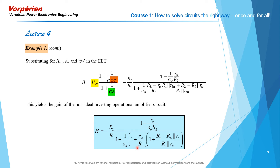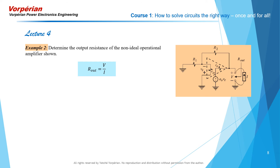Next, we're going to work out the output resistance of this amplifier. In the second example, we determine the output resistance of the non-ideal operational amplifier. To do so, we connect a test current source at its output and study the voltage V appearing across it, while the independent excitation Vin inside the op-amp is set equal to zero. The transfer function we are after is R_out, where the response is V and the excitation is I.